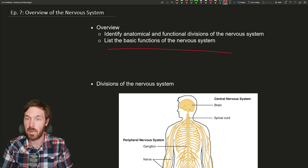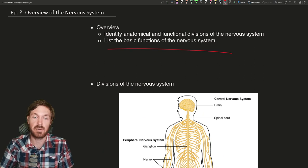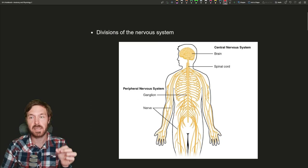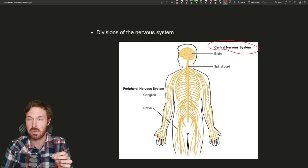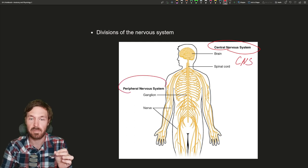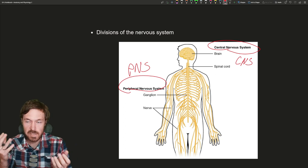We're going to be going over the basic functions and the different divisions. First up, the two main divisions of the nervous system: the central nervous system, abbreviated CNS, and the peripheral nervous system, which is PNS.